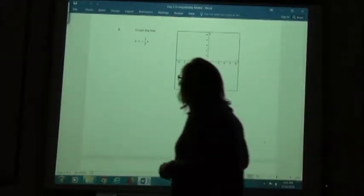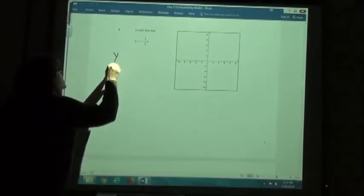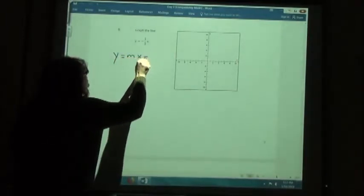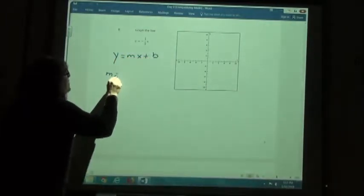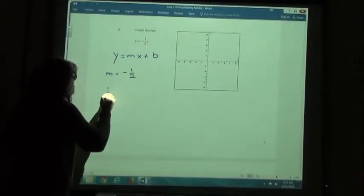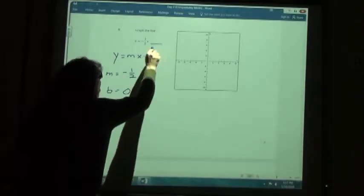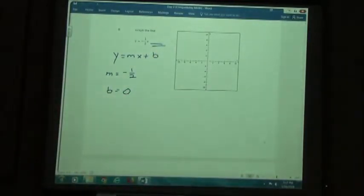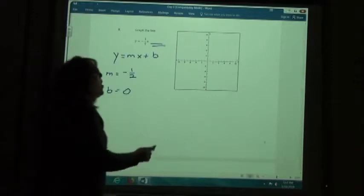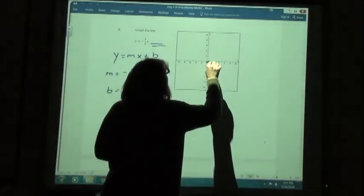Number 8, again, if my equations in the form of y equals mx plus b, my m is negative 1 half, my b is 0. We don't have anything on the end, right? Don't have a plus 0, just like on number 6. We didn't have to have the plus 0. So my y-intercept I'm going to mark right away at 0.